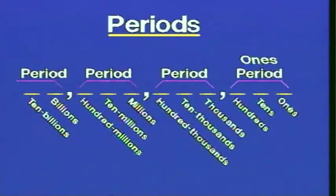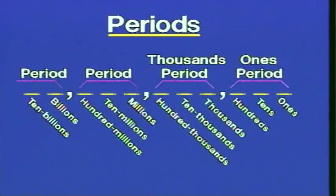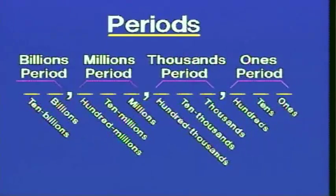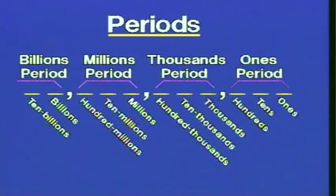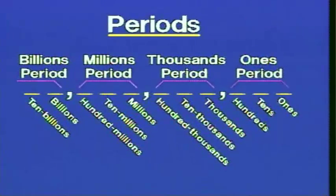The pattern continues on and on. We only have two digits listed here for the billions period, but there is a third digit. The last one listed is ten billions, and ten times ten would be a hundred, so it would be the hundred-billions place. Then another period would follow to the left, and so on.